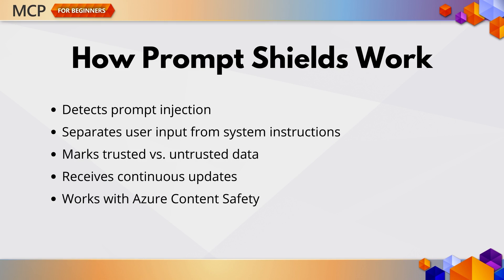So what do you do about all that? Microsoft has a solution called PromptShields, and it's a game-changer. PromptShields protect against both direct and indirect prompt injection attacks. They include: detection and filtering, which finds malicious inputs in documents and emails; spotlighting, which helps the model identify what's a system instruction versus external text; delimiters and data marking, which clearly marks which data is trusted or untrusted; continuous updates from Microsoft; and integration with Azure Content Safety.